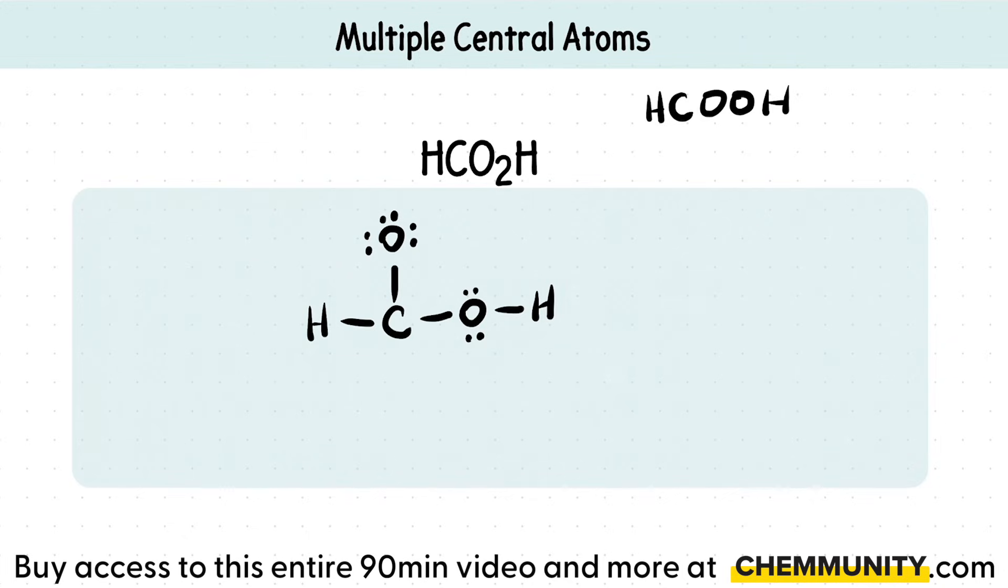So I'm going to find the formal charge of this top one first. So formal charges of oxygen, I'm going to say one. That's valence electrons is six minus however many electrons it currently has. So that's one, two, three, four, five, six, and seven. This has a negative one formal charge.